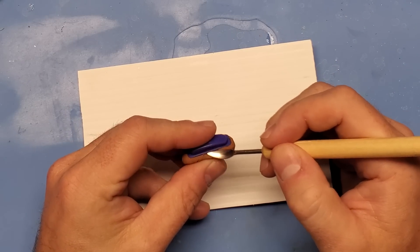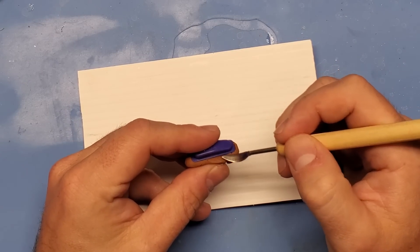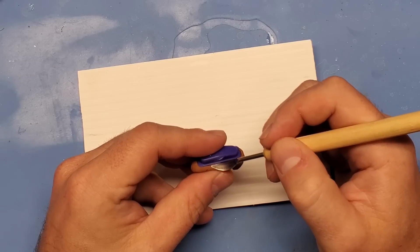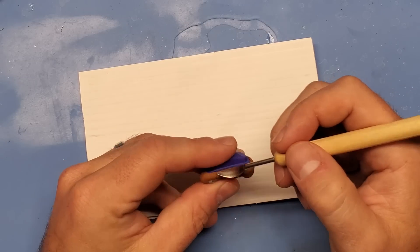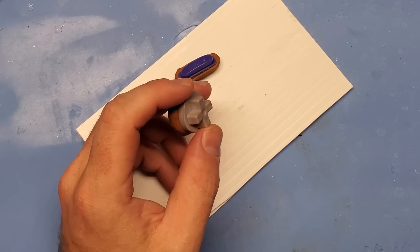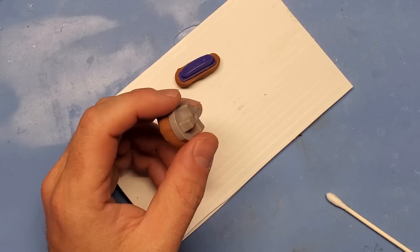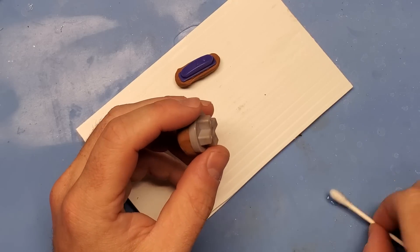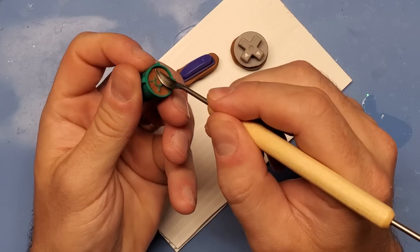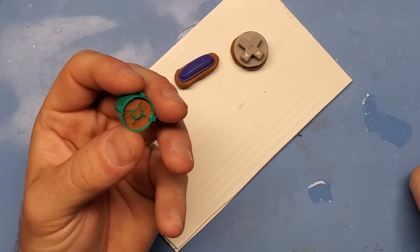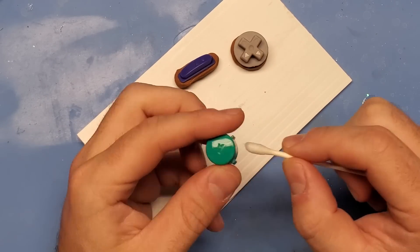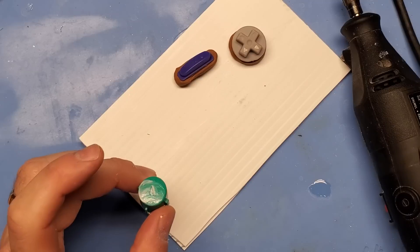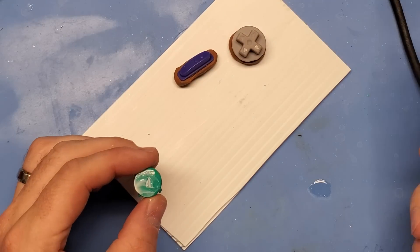So before we start getting too deep into detail here on molding and casting these buttons, I'd just like to say that I've done a full video that gets really in depth on casting. Now what I plan to do here is show some different ways to do different parts of that, as well as some process improvements along the way. I'll point them out as I go, but if you're interested in an in depth, deep dive into casting, make sure you check out the card in the upper right hand corner.